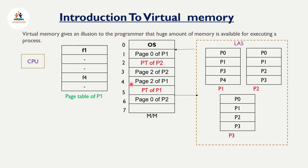We put whatever pages the process needs into main memory. When the process is executed, the user has the feeling of using full primary memory, even though we are working on virtual memory. We only store the required pages. We use two operations: swap in, which loads a page from secondary memory into primary memory, and swap out, which moves a page from primary memory to make room for another process.